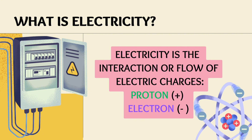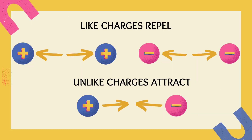Electricity is an interaction or flow of electric charges — protons with positive charge and electrons with negative charge. Just like on magnets, we know that like charges repel and unlike charges attract.